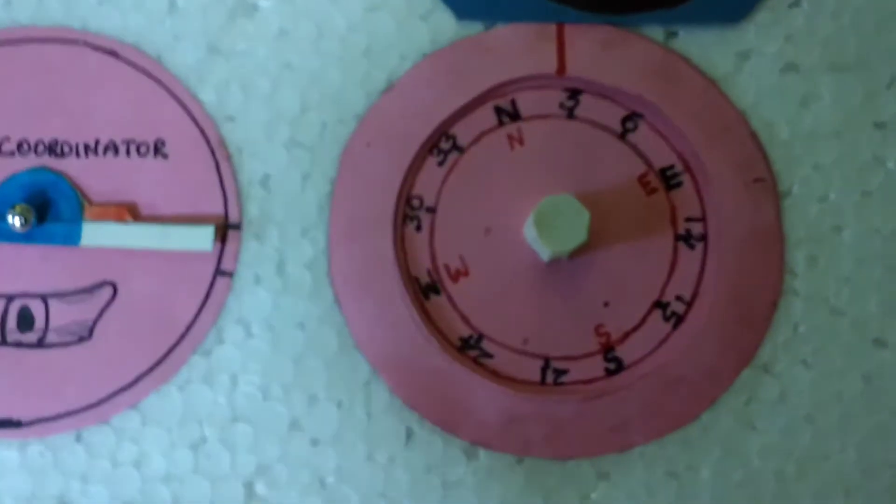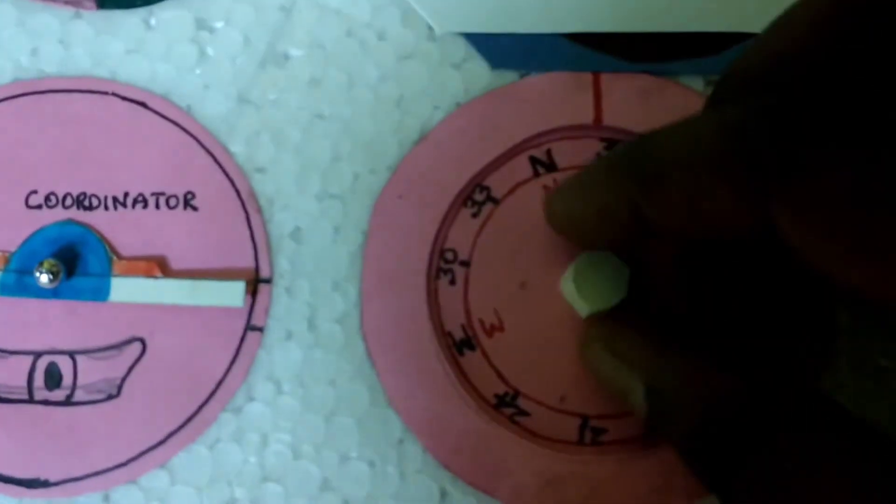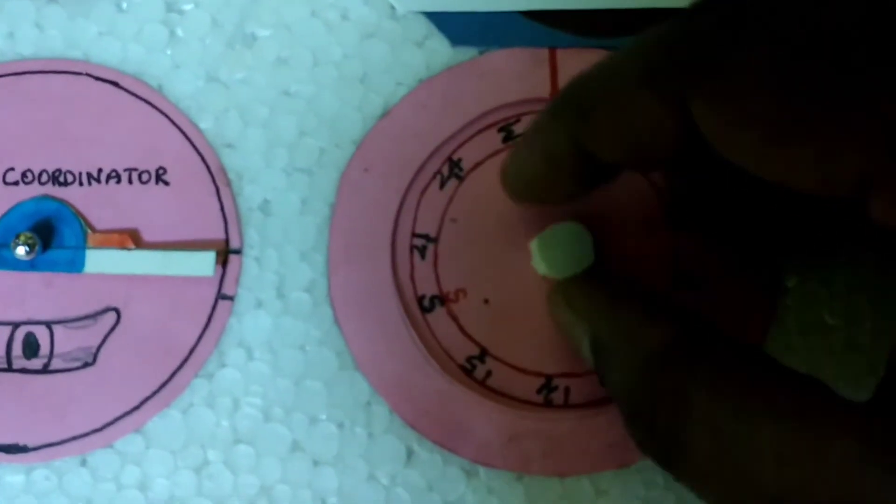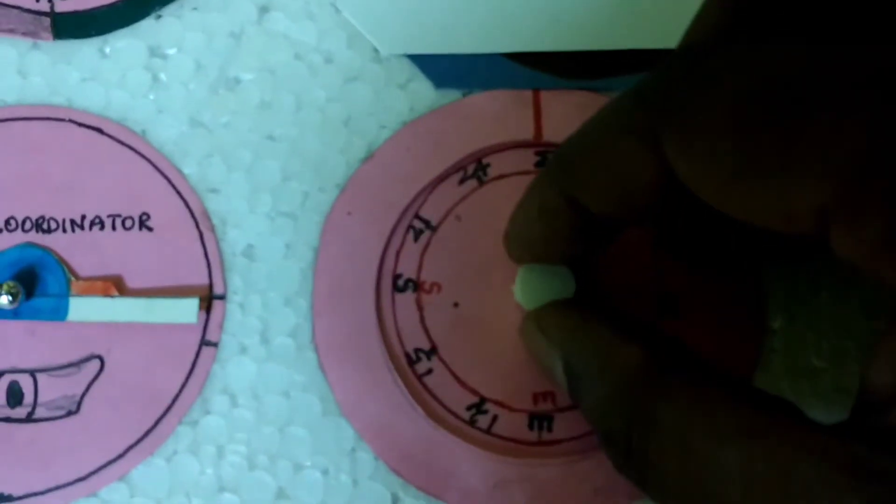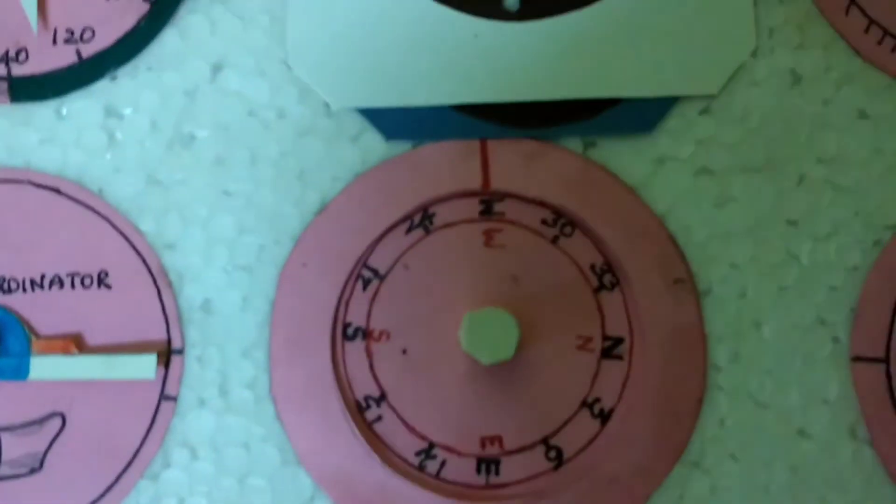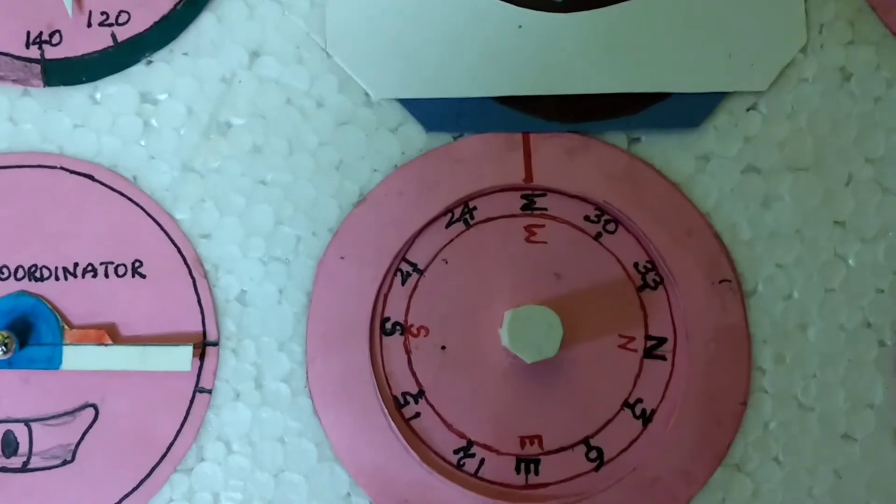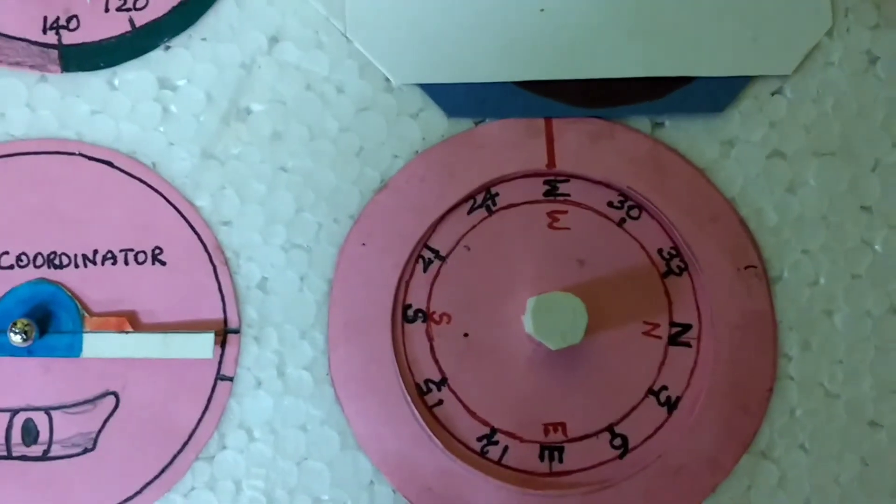This is the compass. I have a knob set up here so you can turn and set the heading. Right now, as it is, you can see the compass reads 270 degrees west—the aircraft is heading 270 degrees west.